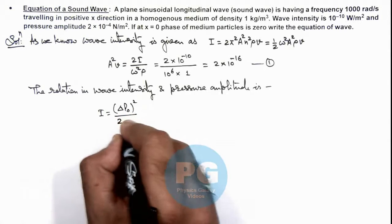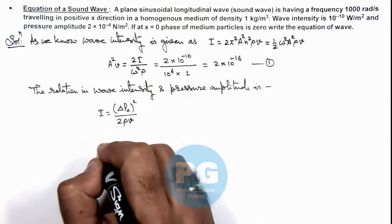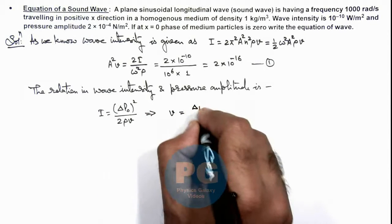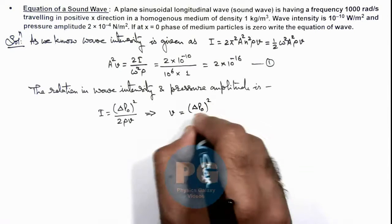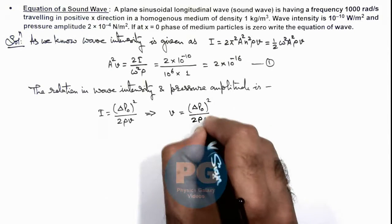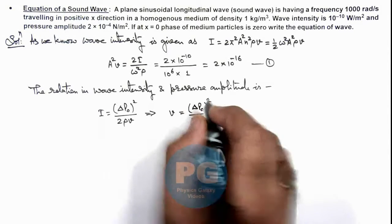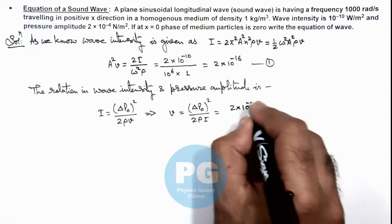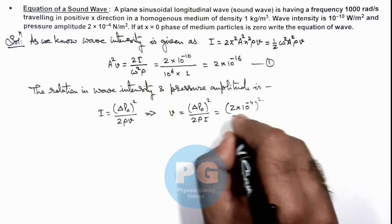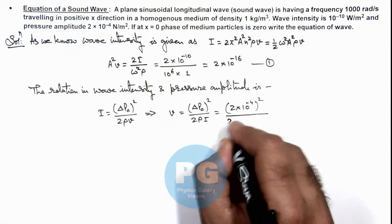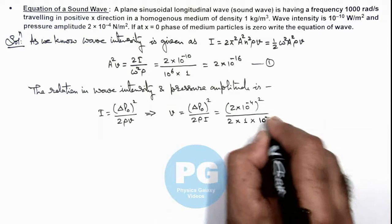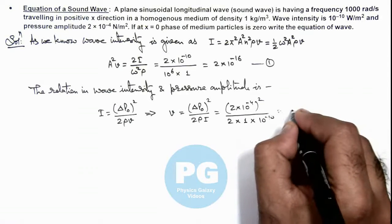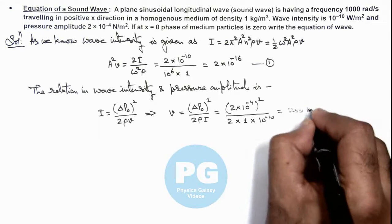And from here we get the value of wave velocity which is ΔP₀² divided by 2ρI. If we substitute the values, delta P not the pressure amplitude we are given as 2 into 10 to power minus 4 whole square, divided by twice of density is 1 and intensity is 10 to power minus 10, which comes out to be 200 meters per second.